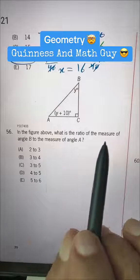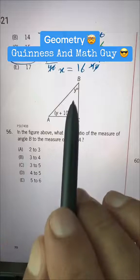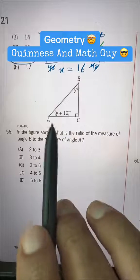In the figure above, what is the ratio of the measure of angle B, this angle, to the measure of angle A, this angle?